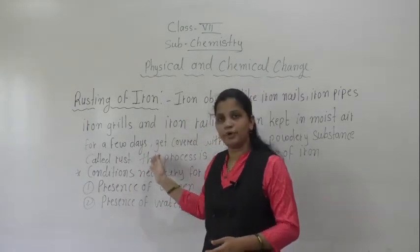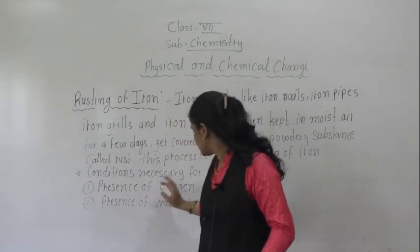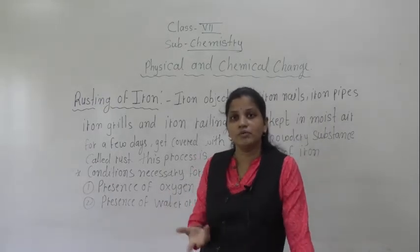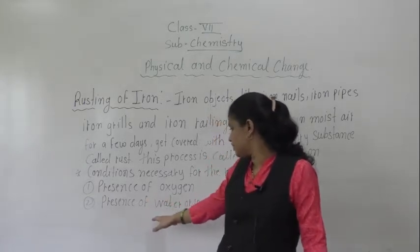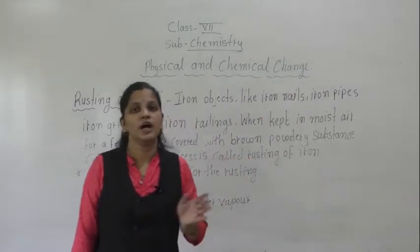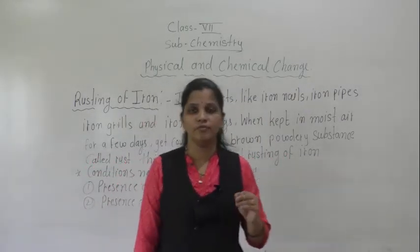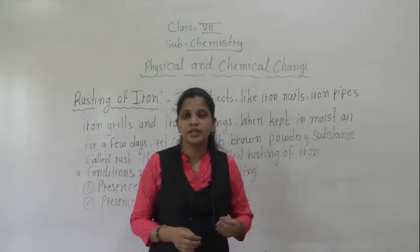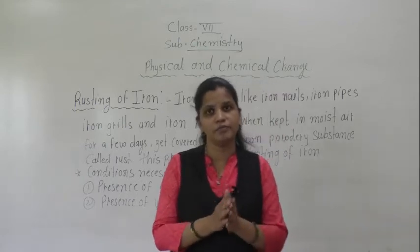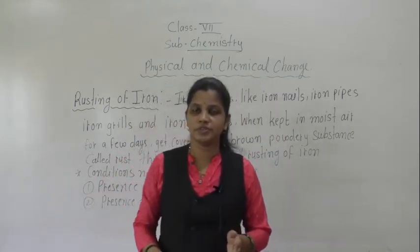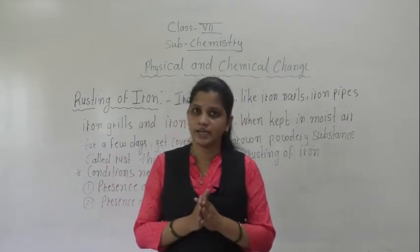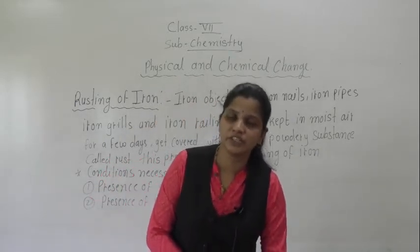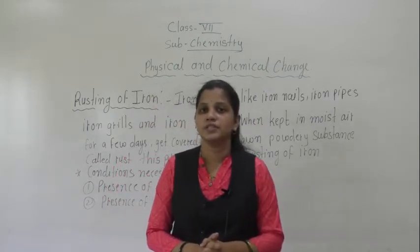Write these points down in your notebook. The conditions necessary for rusting: the presence of oxygen and the presence of water or water vapors. Whenever iron comes in contact with oxygen and water vapors, after a few days it reacts and forms a new substance known as rust. This is why rusting is a chemical change — because a chemical reaction occurs and a new substance is formed.